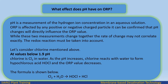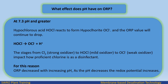Consider chlorine: at values below 1.9 pH, chlorine is Cl2 in water. As the pH increases, chlorine reacts with water to form hypochlorous acid HOCl, and the ORP value decreases. The formula is: Cl2 + H2O → HOCl + HCl. At 7.3 pH and greater, hypochlorous acid HOCl reacts to form hypochlorite OCl⁻, and the ORP value will continue to drop. The stages from Cl2 (strong oxidizer) to HOCl (mild oxidizer) to OCl⁻ (weak oxidizer) impact how proficient chlorine is as a disinfectant.